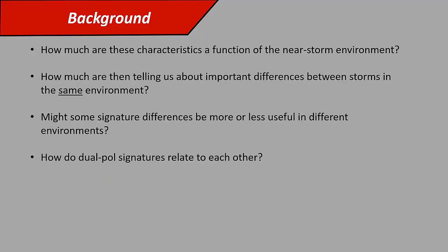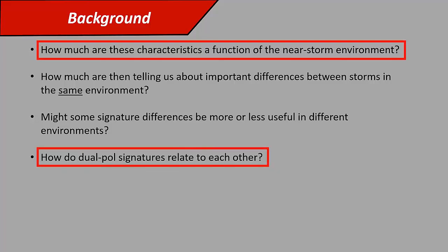There are a lot of questions that still need to be answered with dual-pole signatures. We're going to focus on how these characteristics are a function of the near-storm environment, and how these dual-pole signatures relate to each other. There hasn't been a lot of work looking at different dual-pole signatures in a large spectrum of environments. My master's advisor, Dr. Vandenbroeke, has done some work looking at 12 different environments and clusters of supercells, but there hasn't really been much work looking at a large sample of storms and seeing how ZDR column size varies with CAPE or things like that.